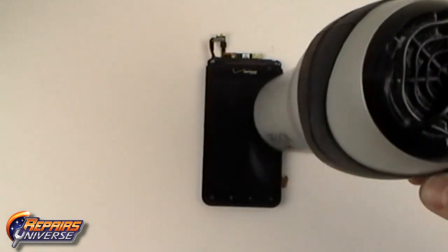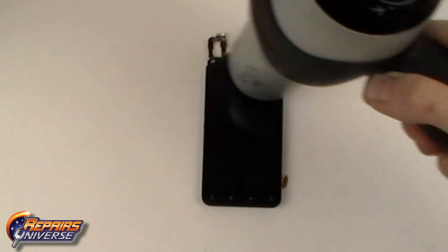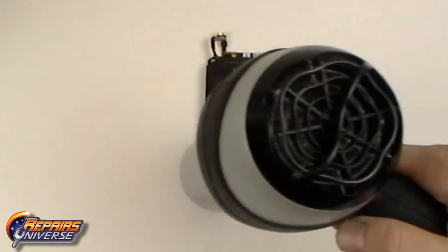Using a heat gun or a hairdryer, we're going to heat the outside edges of the screen assembly. This will soften the adhesive, making it easier to detach.